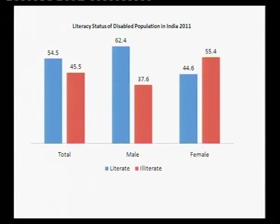Several states have a higher percentage than the national average as a proportion of total population. Looking at literacy, of the total disabled population, 55% are literate. But for males it is 62%, whereas for females it is only 45%. So a huge proportion of illiteracy is concentrated among women with disabilities.